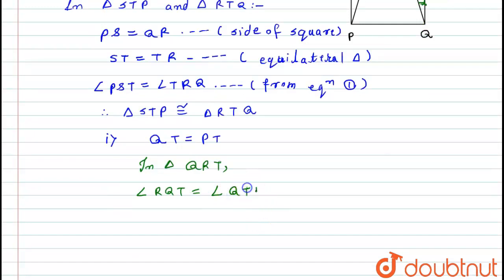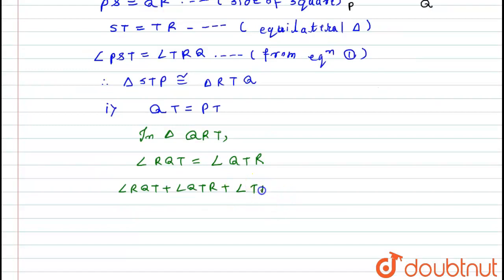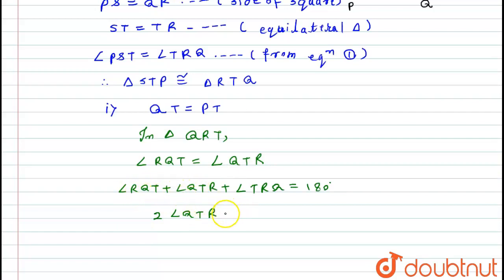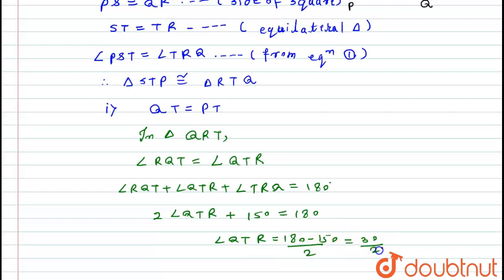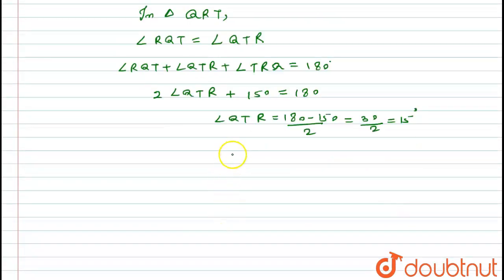Since the sum of all angles in a triangle equals 180 degrees, we have angle RQT plus angle QTR plus angle TRQ equals 180 degrees. Since angle RQT equals angle QTR, we can write twice of angle QTR plus 150 degrees equals 180 degrees. Therefore, angle QTR equals (180 minus 150) divided by 2, which equals 30 divided by 2, which equals 15 degrees. The second part is proved.